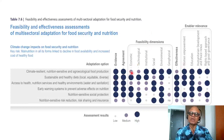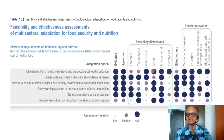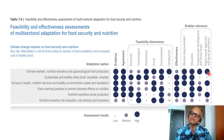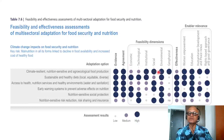For this adaptation option, the economic and technological feasibility dimensions are medium, but institutional, social, environmental, and geophysical dimensions are high. All enabler relevances — women's empowerment, education, human development and peace nexus, and rights-based approach and good governance — are high. Yet even with high feasibility and high enabler relevance, the overall effectiveness is still only medium.